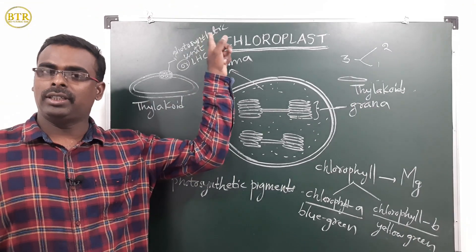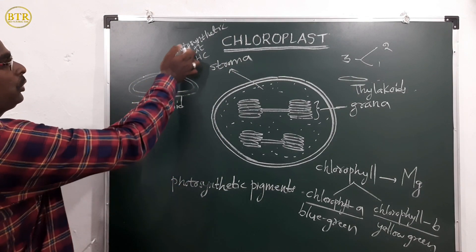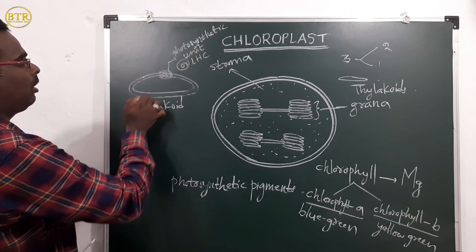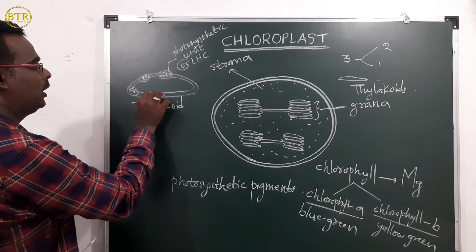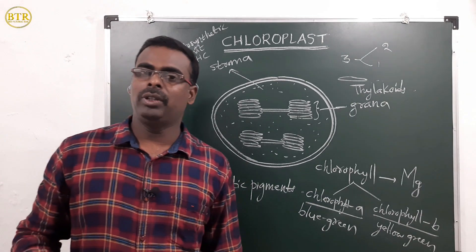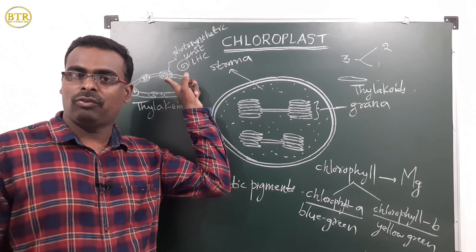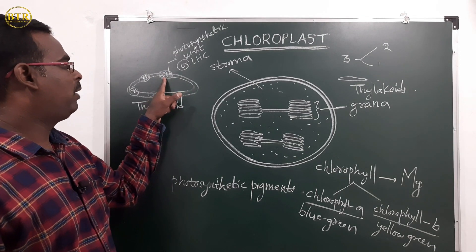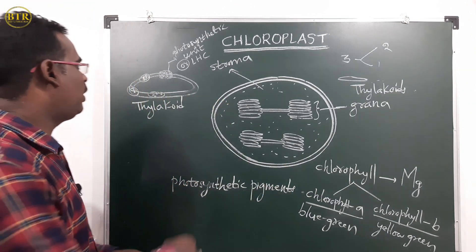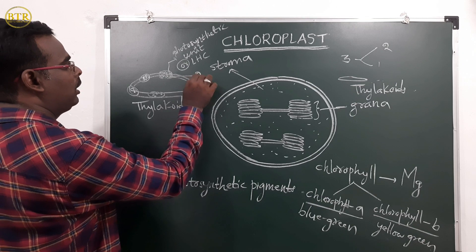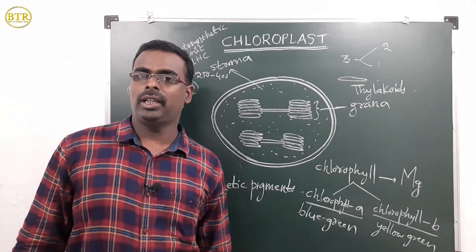Many photosynthetic units are present in the membrane of the thylakoid. Many pigment molecules gather together to perform photosynthesis, and this group is called a photosynthetic unit or light harvesting complex. There are approximately 250 to 400 pigment molecules present in each photosynthetic unit.